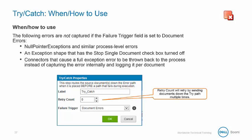The retry count will retry documents down the try path multiple times. Typically this will be used for cloud applications where connectivity could be dropped temporarily. The failure trigger selectively routes documents down the catch path and this can be set to document errors or all errors.